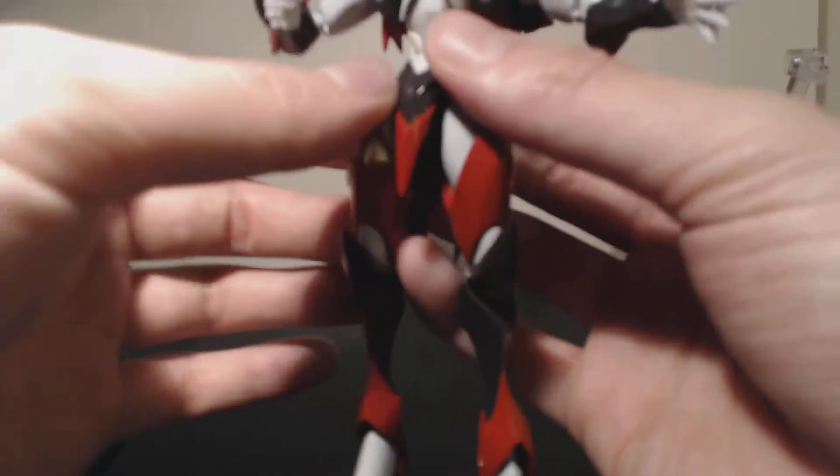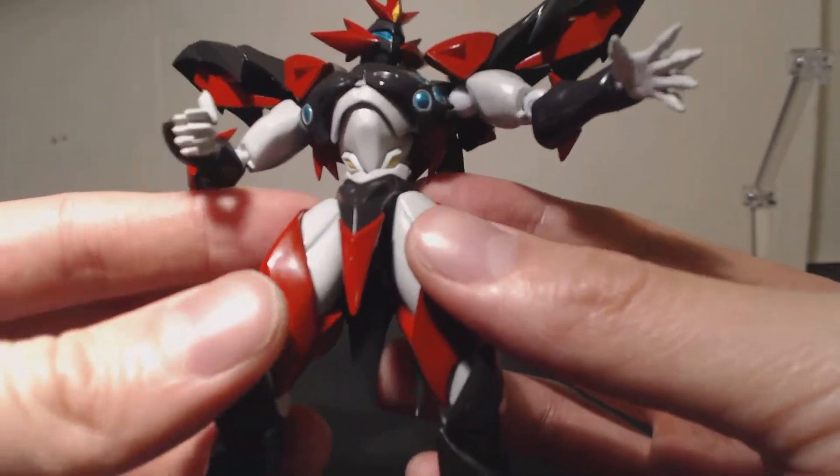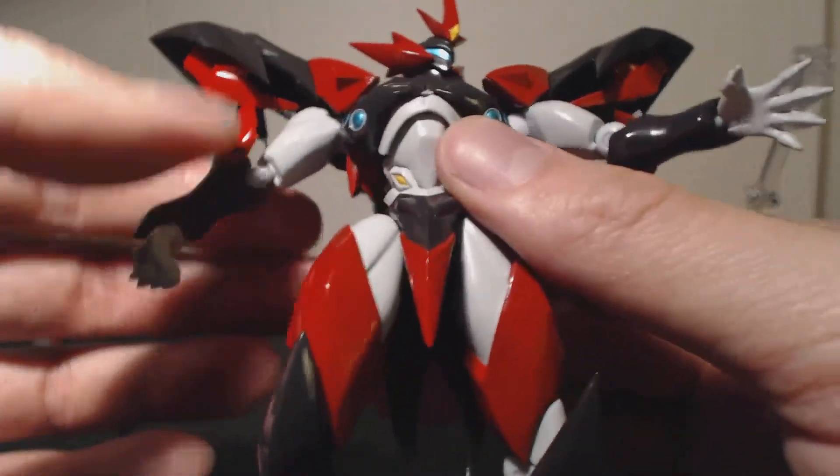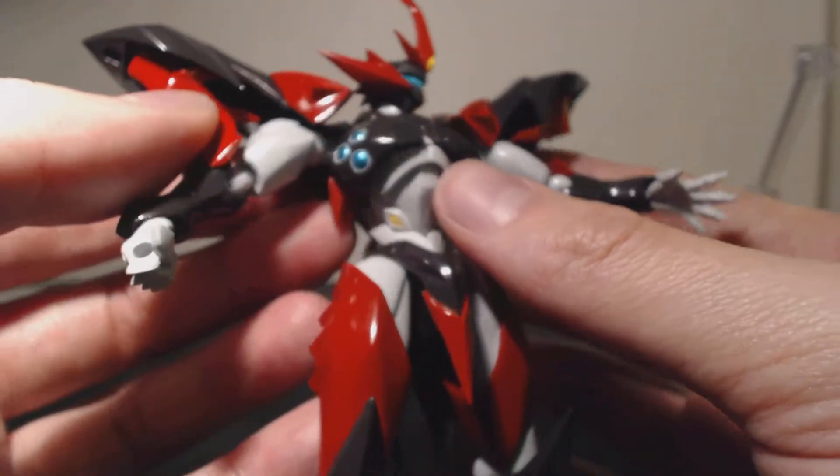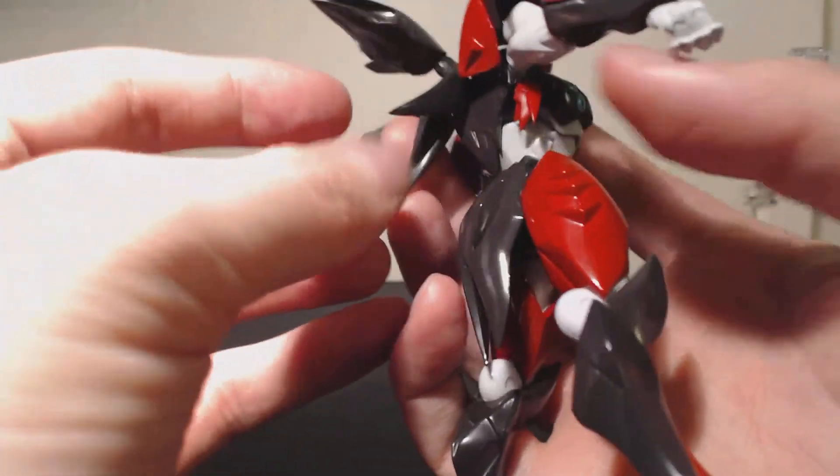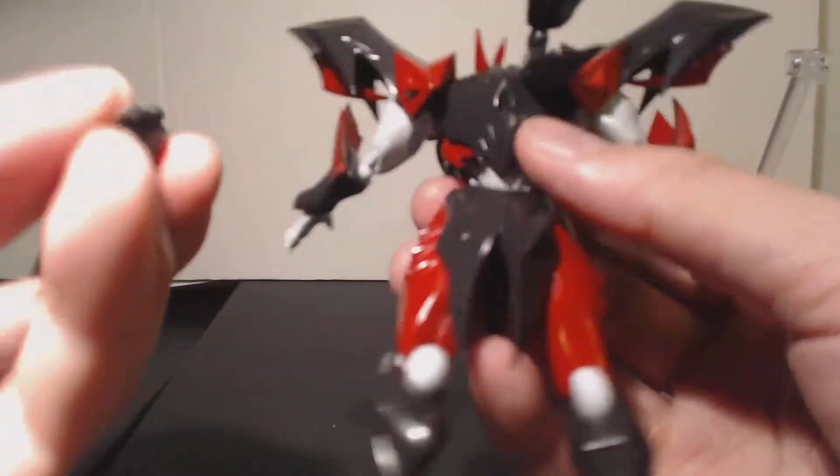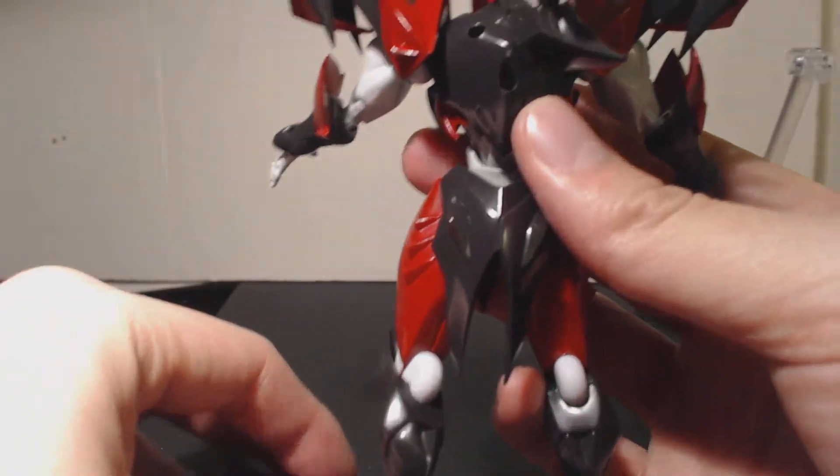Okay, so like all Figma figures, actually, it includes the stand. So there you go. That's very nice of them. Okay, so in terms of posability, or in terms of gimmicks, other gimmicks that are different from Tekkaman Blade, is the inclusion of wings in the back of Tekkaman Evil.